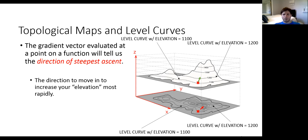Suppose our position was not there but at the base of the mountain. We map that position down into the contour map and think about the gradient vector telling us which direction to walk. The gradient vector points in the direction of steepest ascent towards the maximum — towards the top of that hill. Moving in this direction takes us up the mountain in that direction towards the peak.